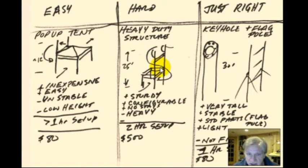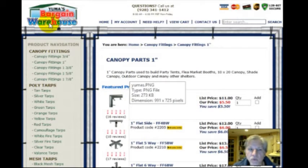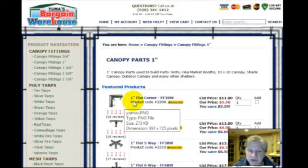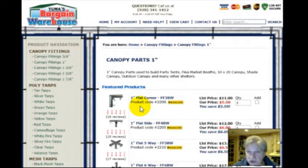Let me show you where you can get those at. Good old Yuma's Bargain Warehouse. Yuma's Bargain Warehouse has all different types of fittings, but these will only work with one-inch EMT conduit pipes, which is actually what you want because the three-quarter inch is just a little too flimsy.